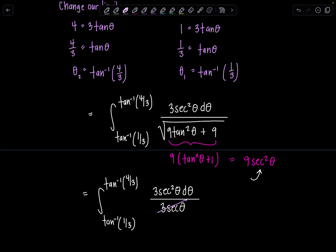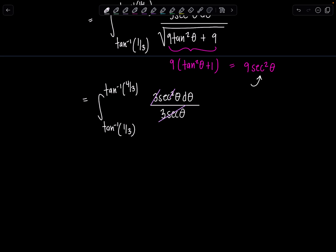So we have tan inverse 1 third, tan inverse 4 thirds. In the numerator, 3 secant squared theta d theta over, I have square root of this quantity, so it's just going to be 3 secant theta. Fabulous. The 3s cancel out as well as one of the secant thetas that's in the numerator. So then we're almost at the home stretch. You guys are doing great. Integral tan inverse 1 third, tan inverse 4 thirds, and then we just have secant theta d theta.